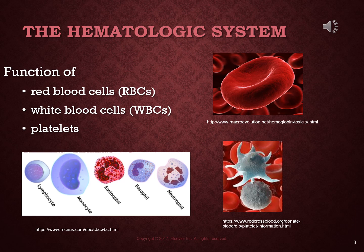To summarize: platelets are important in clotting, white blood cells are important in immune and inflammatory responses, and red blood cells are important in oxygen transport.